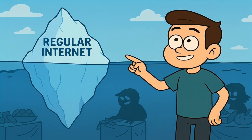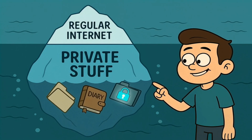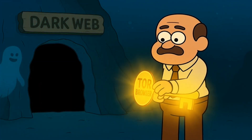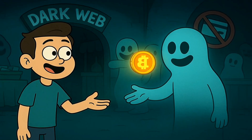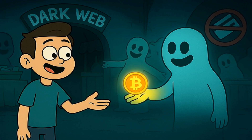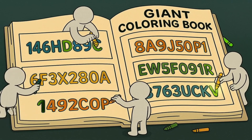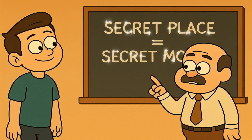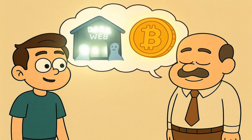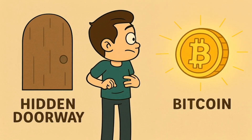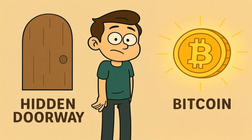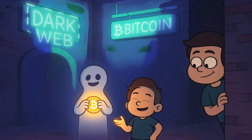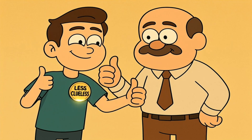Now let's recap. The internet is a giant iceberg. The top part is the regular internet, and underneath is all the boring stuff. And at the very, very bottom is the dark web — a secret clubhouse where everyone is a ghost. To get in, you need a special key called the Tor Browser. And since you can't use your real money in the secret clubhouse, you use magic internet money called Bitcoin. Bitcoin works because every transaction is recorded in a public coloring book, but everyone uses a secret codename, so nobody really knows who is who. Secret place, secret money — it's really that simple. You understand the fundamental connection between the dark web and Bitcoin. It's not some high-level computer science wizardry. It's just a hidden place that needed a hidden form of payment to work. It's a tool for anonymity, and like any tool, it can be used for both good or bad. But on the dark web, it mostly found its purpose with the latter.